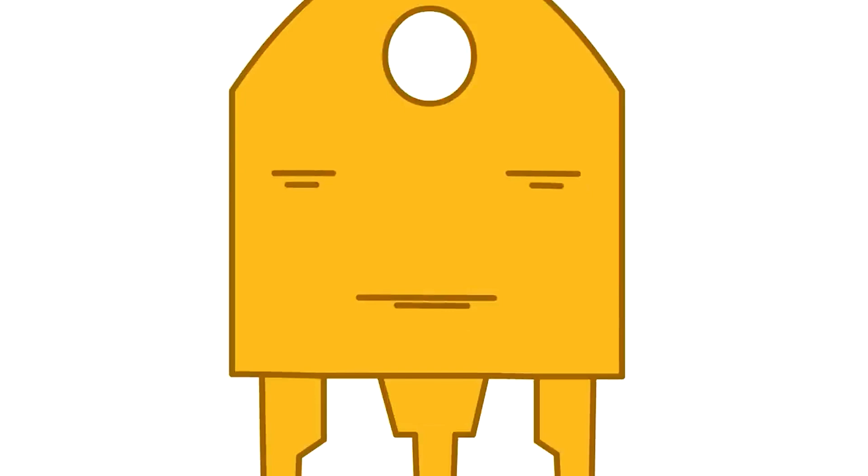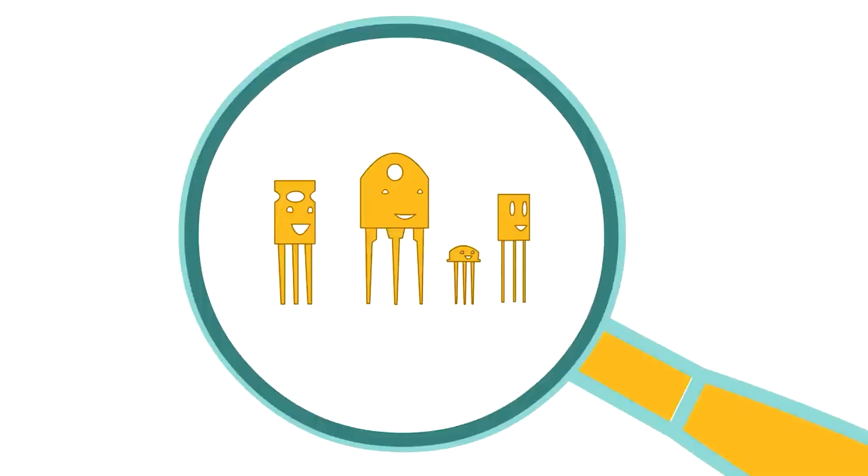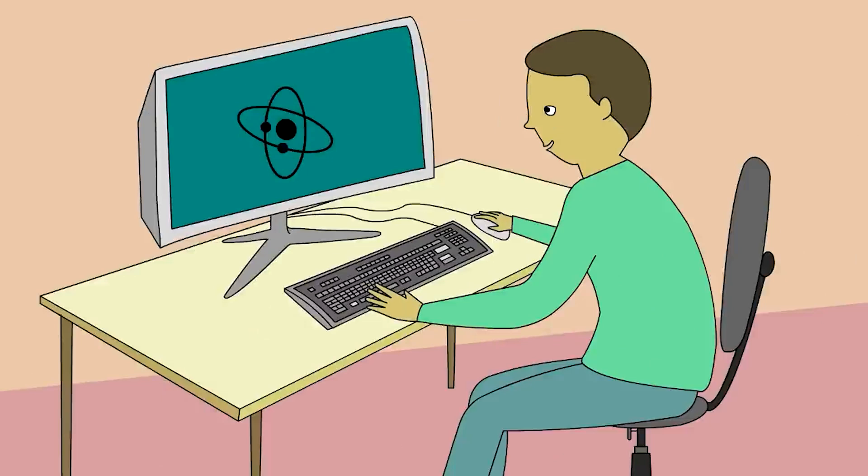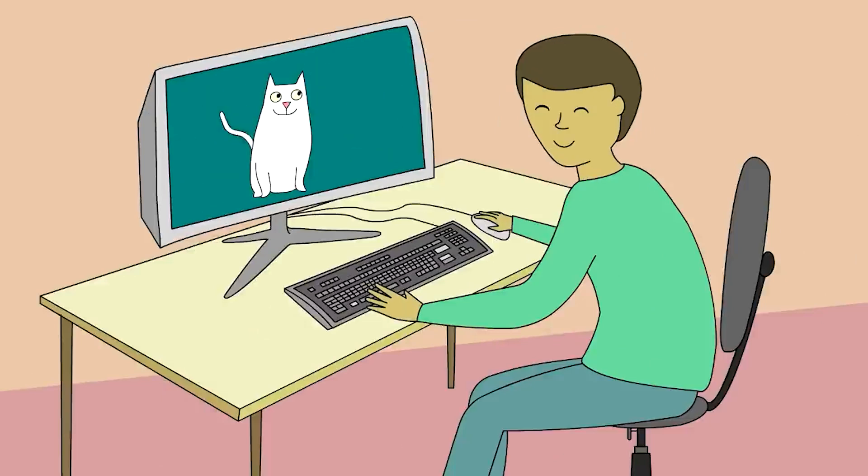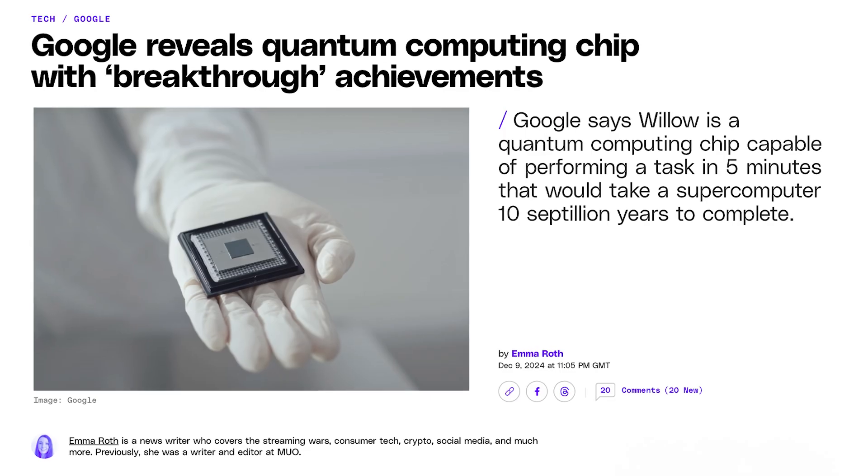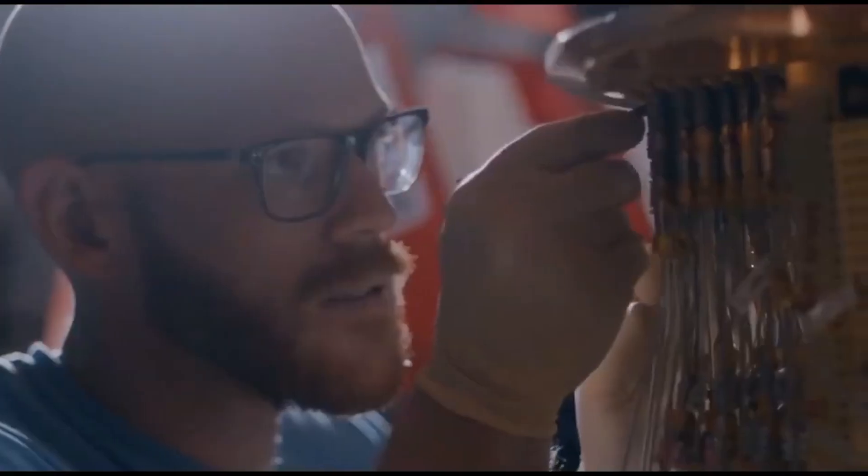Schrödinger's cat isn't just inspiring new experiments, it's shaping the future of technology. Quantum computers, which rely on principles of superposition and entanglement, are set to revolutionize fields from medicine to cryptography. Unlike classical computers which use bits, quantum computers use qubits, which can exist in multiple states simultaneously. This allows them to solve complex problems exponentially faster. In 2019, Google claimed quantum supremacy when its quantum computer performed a calculation in 200 seconds that would take a supercomputer 10,000 years to complete.